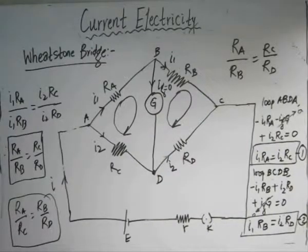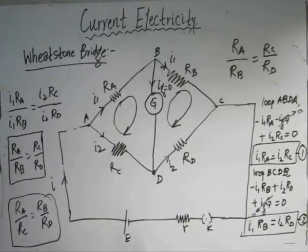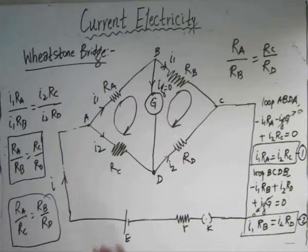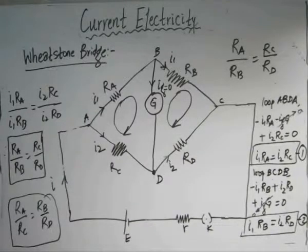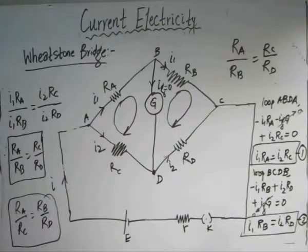Based on this Wheatstone Bridge concept, we can also simplify certain resistor circuits. In order to find the equivalent resistance between two points, we can use the Wheatstone Bridge principle to simplify circuits containing combinations of resistors, as we will see in the next example — a simple example where we use the Wheatstone Bridge principle to reduce the circuit.